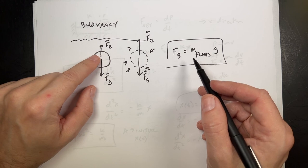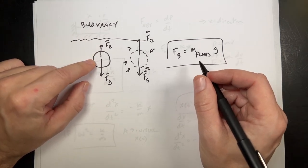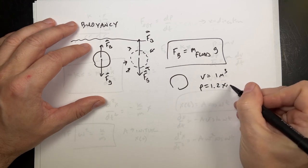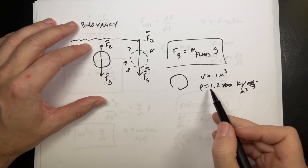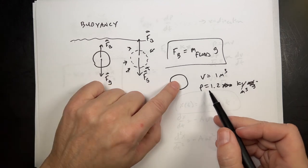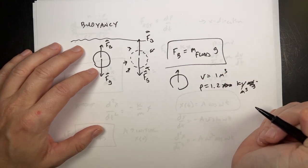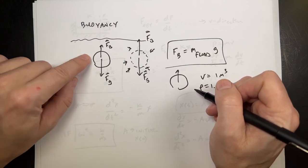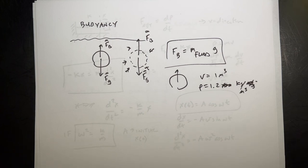The magnitude of the buoyancy force is the mass of the fluid displaced times g. If the buoyancy force is less than the gravitational force, the object accelerates down; if greater, it accelerates up. For example, a balloon with a volume of 1 cubic meter in air — the density of air is 1.2 kg/m³, so the equivalent fluid mass is 1.2 kg, giving a buoyancy force of about 10 newtons. It's just an example of a contact force. That's Chapter 4.